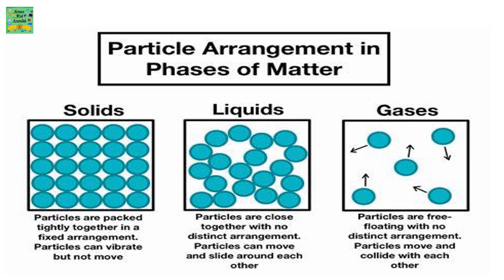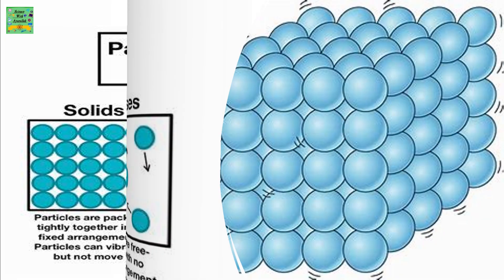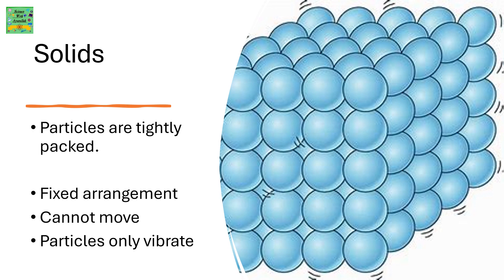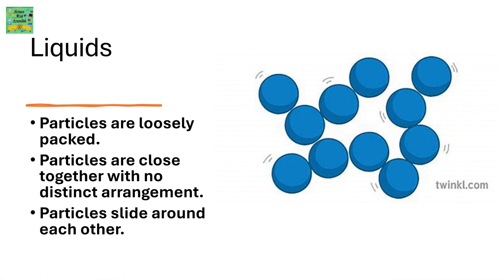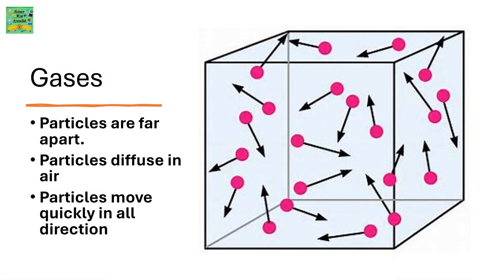Particle arrangement in phases of matter: you can see the particle arrangements in solids, liquids and gases. In solids, particles are tightly packed with a fixed arrangement; they cannot move and only vibrate. In liquids, particles are loosely packed, close to each other with no distinct arrangement, and they slide around each other. In gases, particles are far apart, diffuse in the air, and move quickly in all directions.